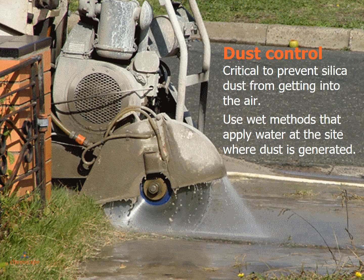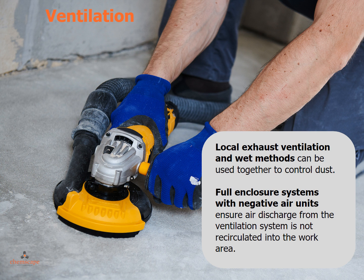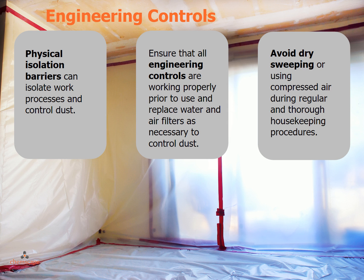Dust control is critical to prevent silica dust from getting into the air. Use wet methods that apply water at the impact site where dust is generated. Silica dust can also be removed at the point where dust is made using local exhaust ventilation, which can be used in conjunction with wet methods. Full enclosure systems with negative air units ensure air discharge from the ventilation system is not recirculated into the work area. Physical isolation barriers can isolate work processes and control dust. Ensure that all engineering controls are working properly prior to use and replace water and air filters as necessary.